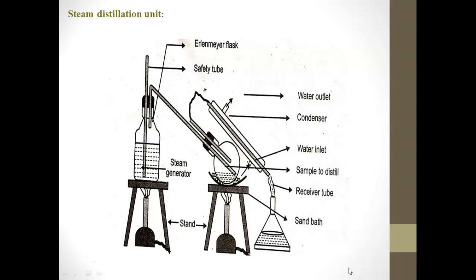The steam distillation unit consists of a steam generator connected to a round-bottom flask containing the mixture. The flask is connected to a condenser, and finally a receiver collects the distillate. Steam from the generator enters the mixture, causing the mixture to boil at a lower boiling point; it condenses in the condenser and is collected in the receiver.